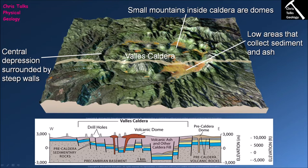Within the depression, volcanic domes produce large amounts of pyroclastic material during their eruptions and destruction, which builds up inside the caldera. Erosion by wind, rain, or ice also redistributes this volcanic material. The dikes that feed the domes typically exploit pre-existing faults — we can identify a fault where one block has dropped relative to its neighbour, and that fault plane was exploited by lava as it moved toward the surface.